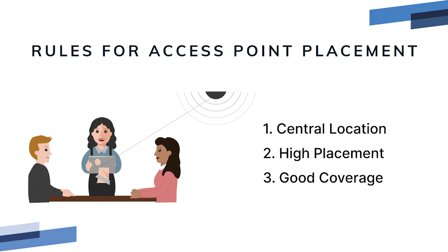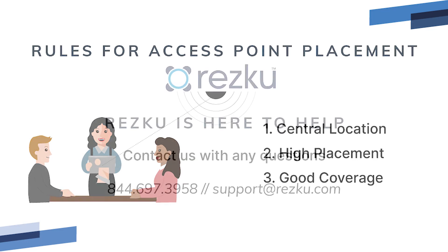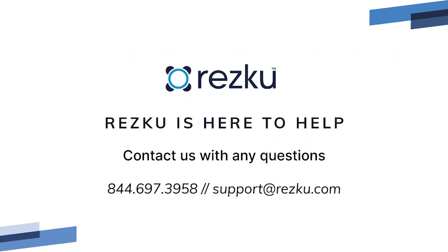Rule three: good coverage — you may need additional access points to achieve optimal coverage, for example if there are multiple floors or patio dining. So we've completed our coverage of networking basics.